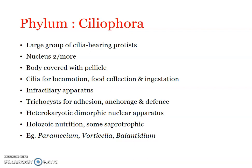The next phylum is Phylum Ciliophora. We have already discussed one example — Paramecium — in extensive detail. As the name indicates, the locomotory organelle is cilia. Ciliophora is a large group of cilia-bearing protists. Usually two or more nuclei may be present, and the body is covered with a pellicle. Cilia are used for locomotion, food collection, and ingestion. A very unique infraciliary apparatus is present — including the pellicle, alveoli, and trichocysts — which was not found in the previous phyla we discussed.